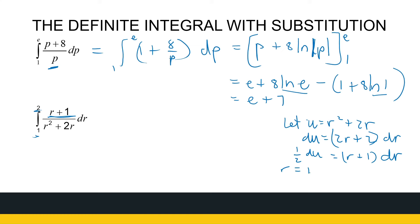Now I need to look at the limits of integration. r is equal to 1, that means u is going to be 1 plus 2, which is 3. And r equal to 2 means u is equal to 4 plus 4, which is 8. So now I make my substitution, and that's the integral from 3 to 8.